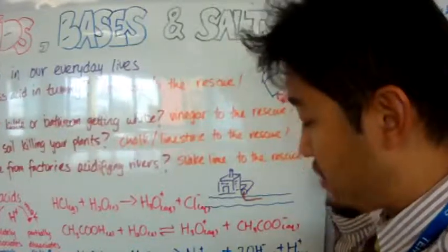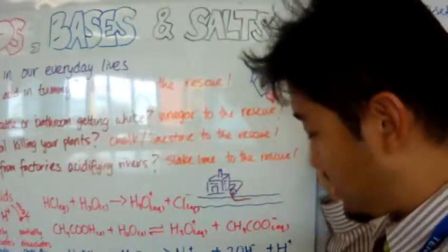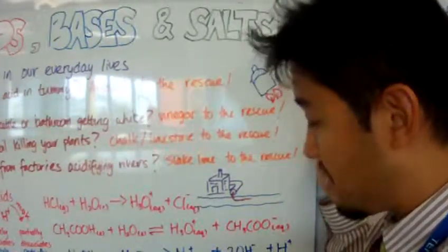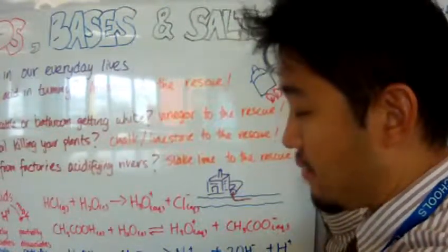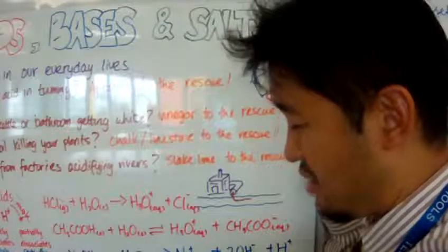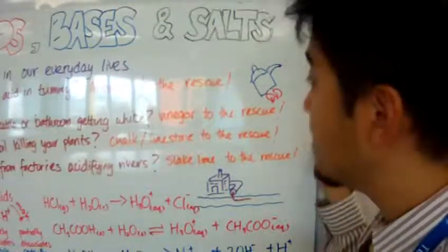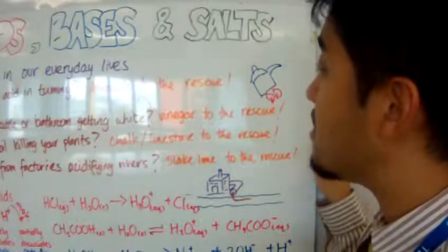What about a weak base? Ammonium with water forms ammonium and a hydroxide. This is base. And it's also partially dissociated. So most of it will stay as a gas, dissolved gas in water. Alright. So that's all acids, bases and salts.